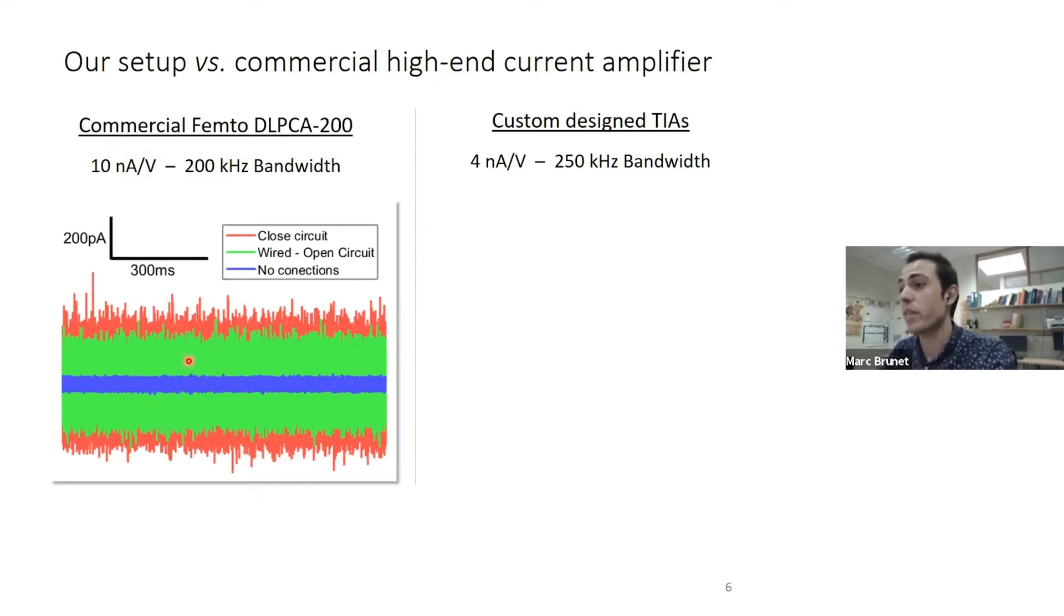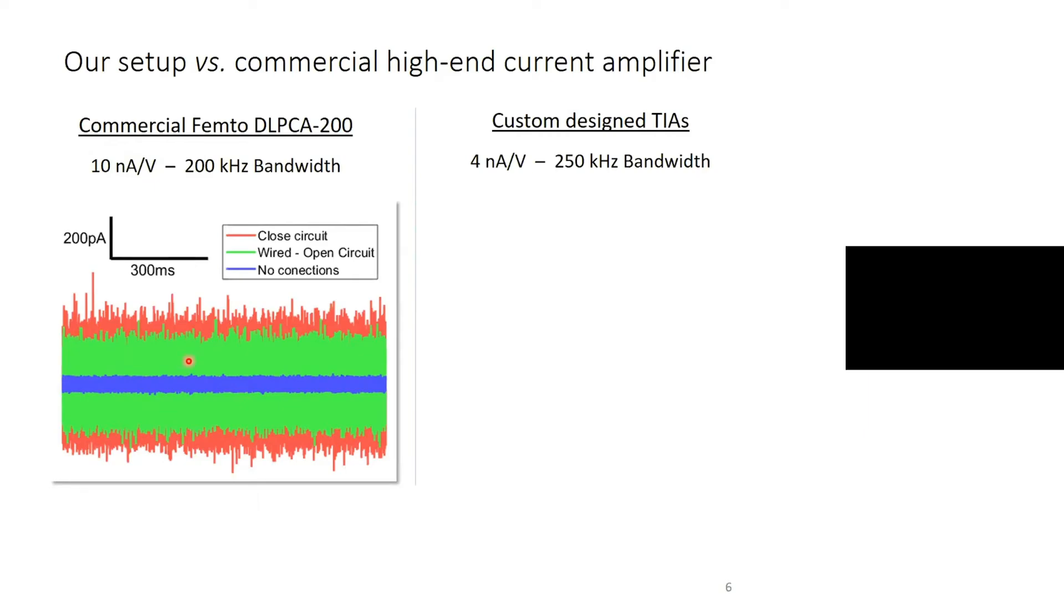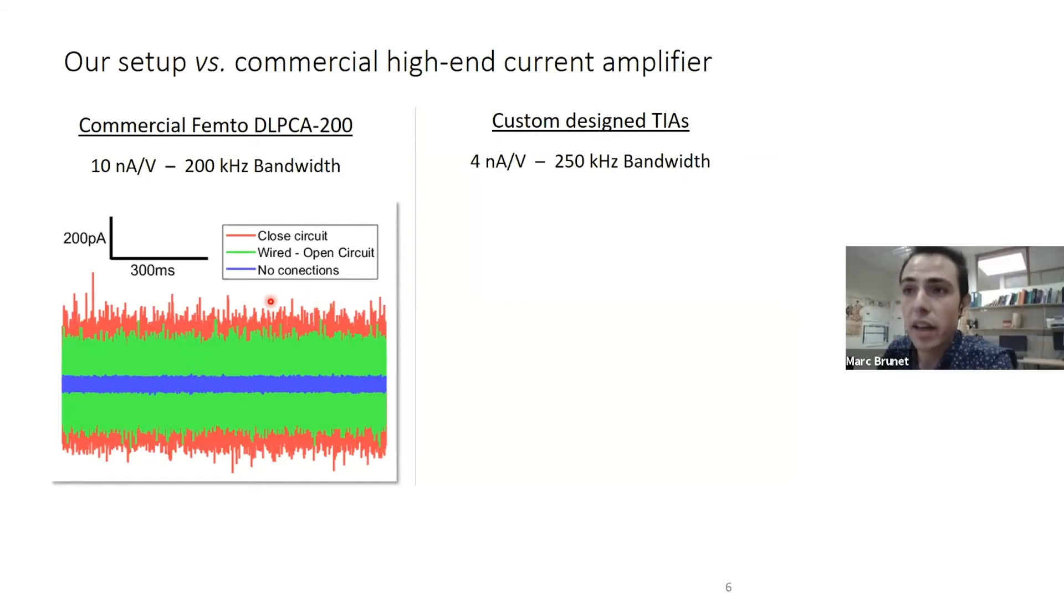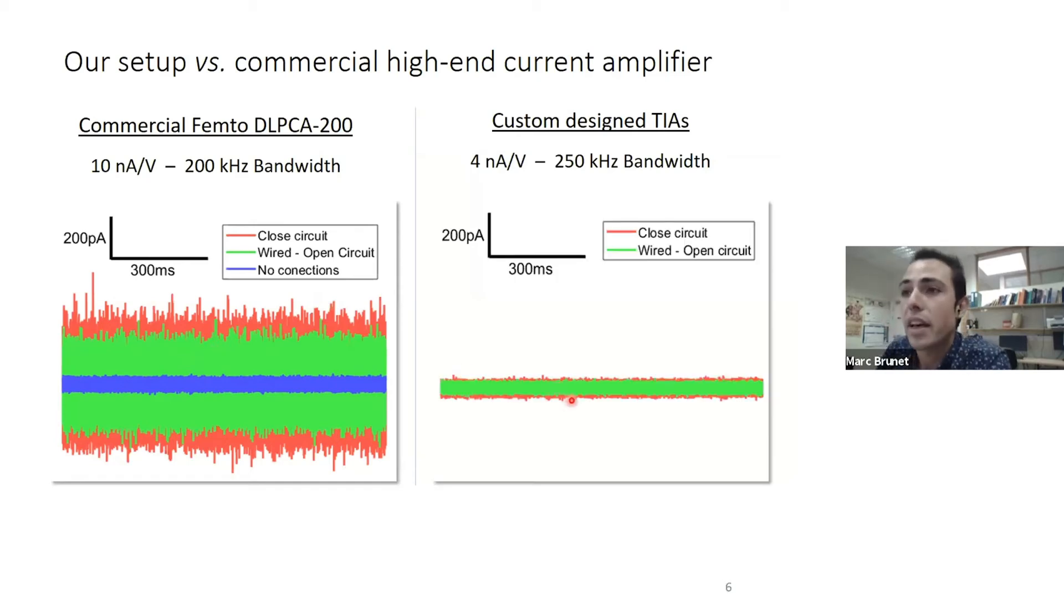When we add all the connections to make a two-electrode cell, the noise increases very significantly to the green trace we have here. As mentioned before, this is due to all the parasitic connections from the wiring. In red, we have the current trace when the cell is formed.